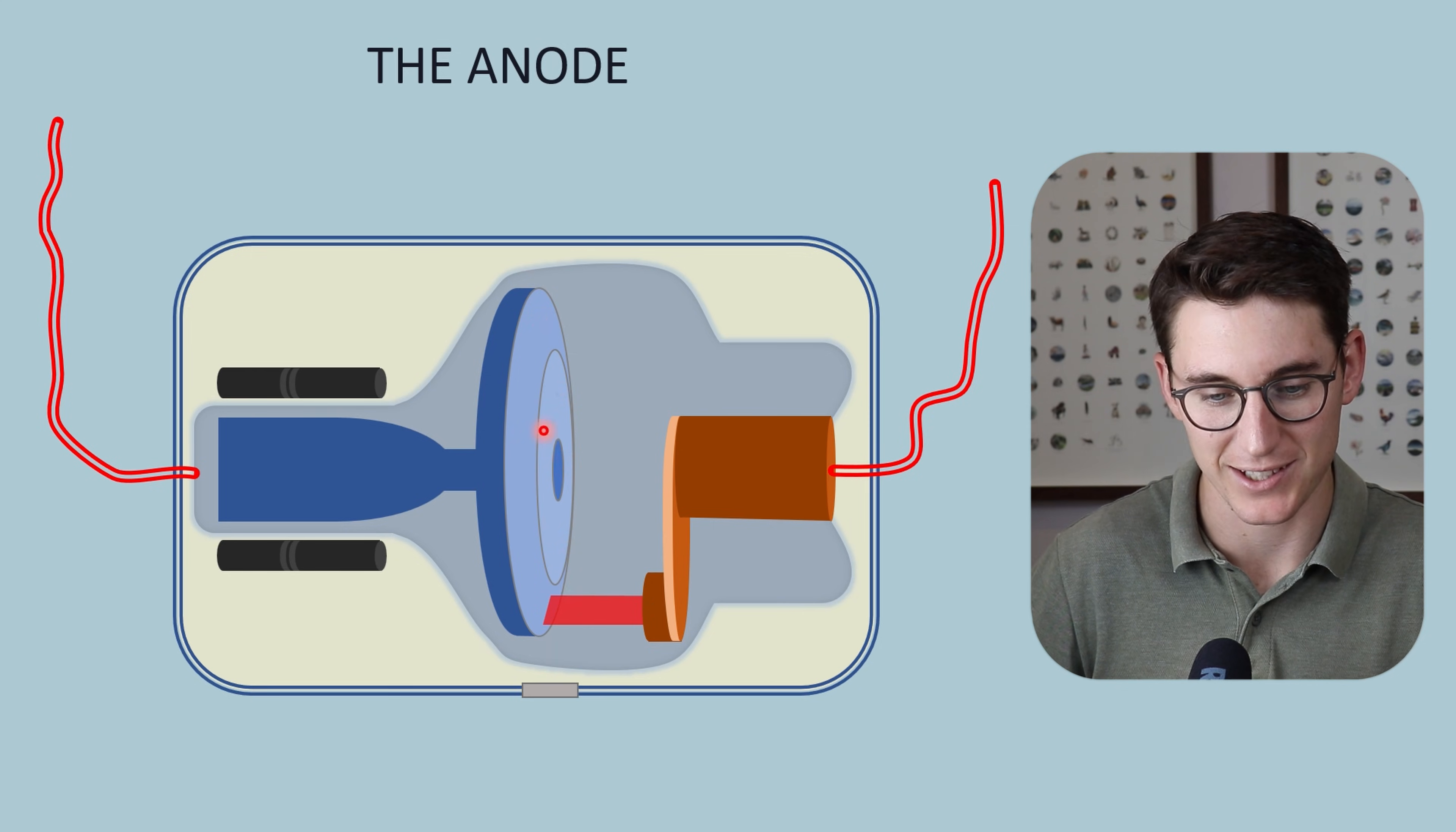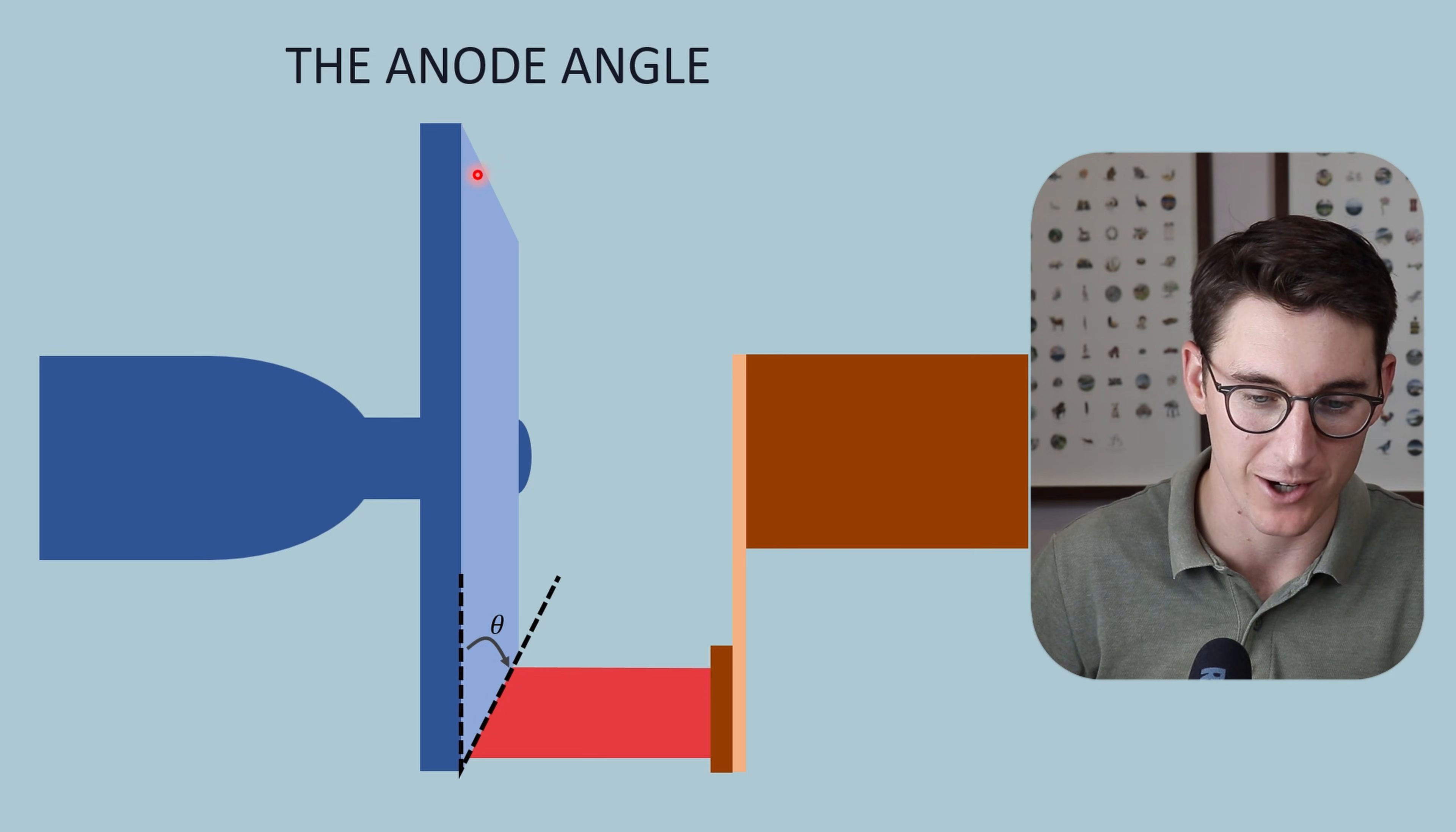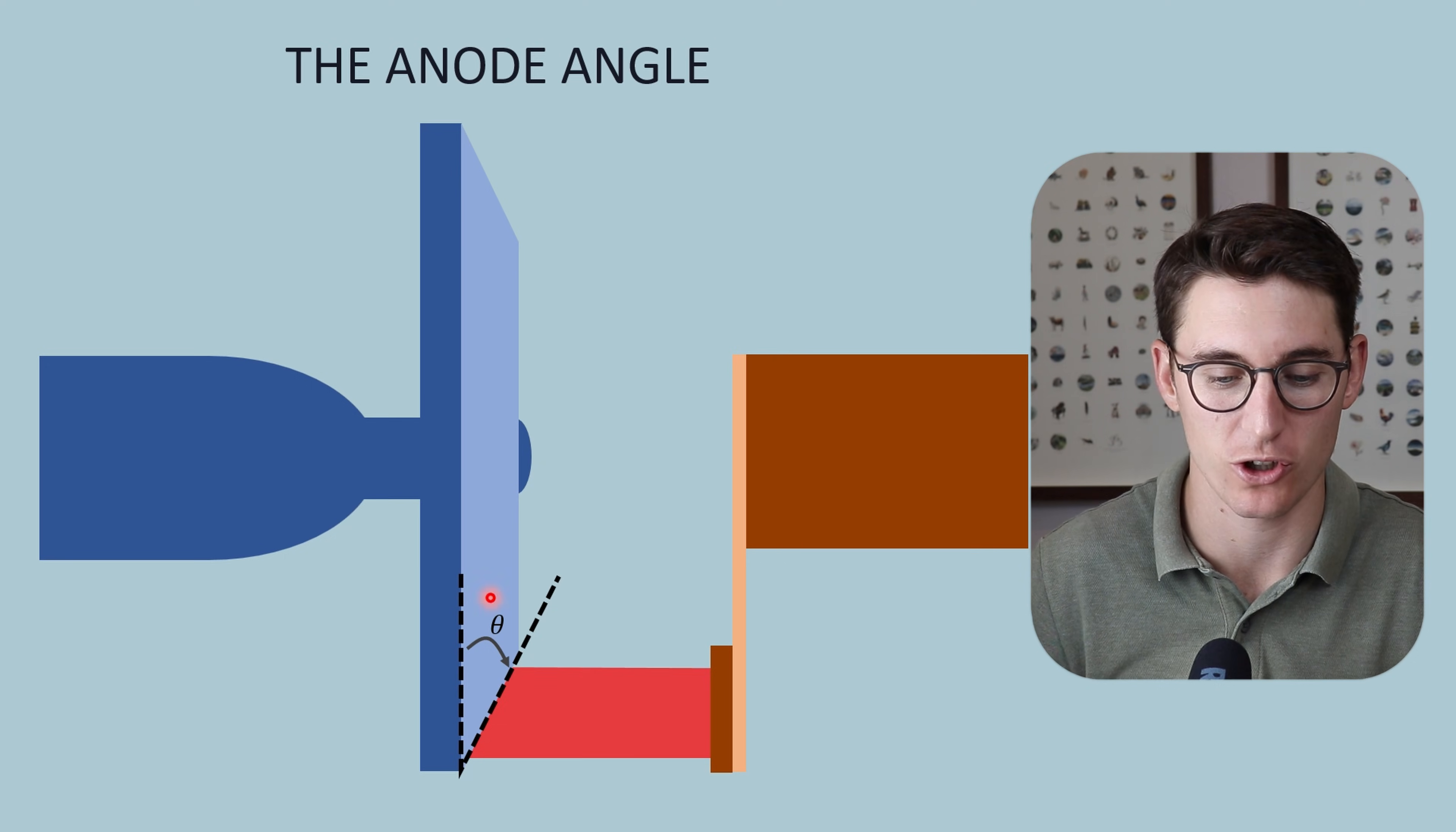If we cut this anode in cross section to view that angle, this is what it would look like. Here is a 2D diagram showing our cathode on its side, the electron beam going across towards our actual focal spot on our anode. This angle here is the anode angle, and we can change that angle to change some of our x-ray beam geometry.